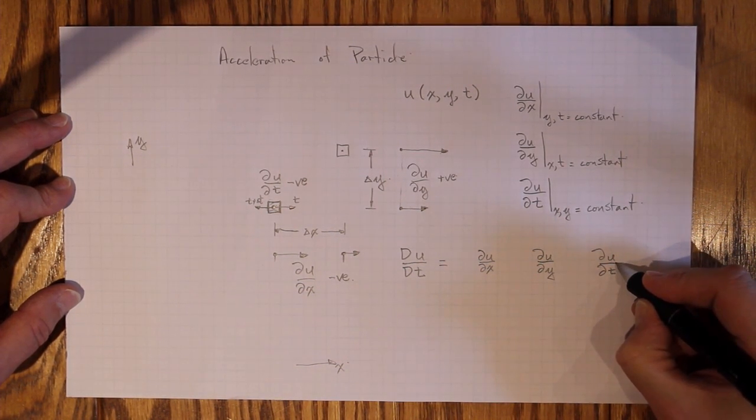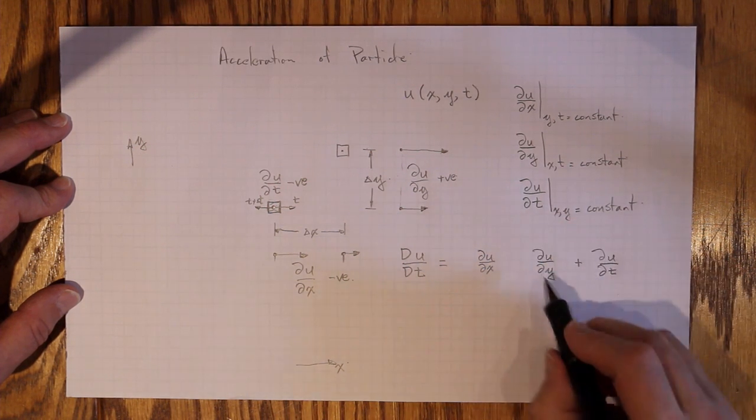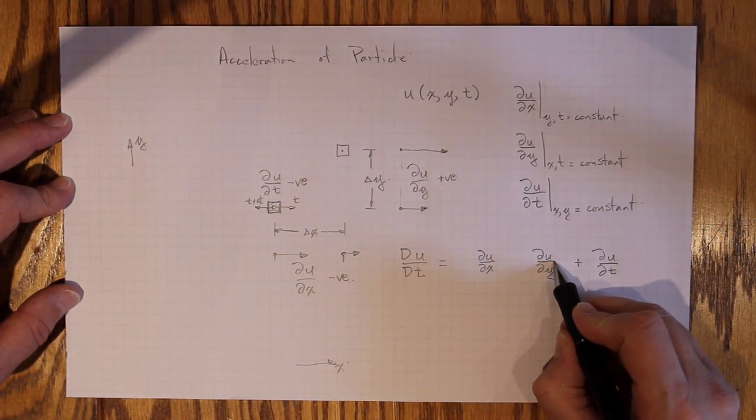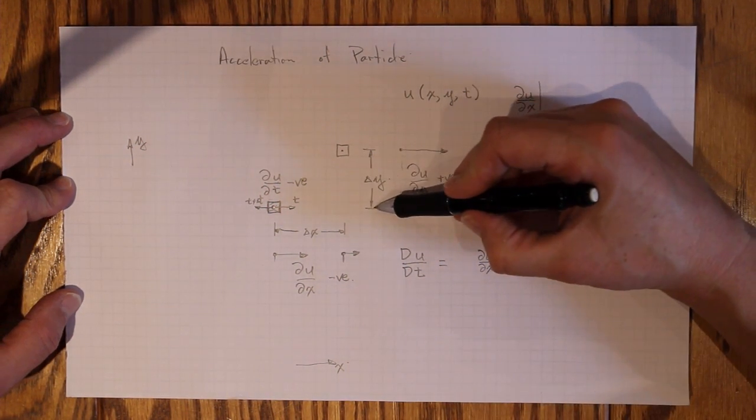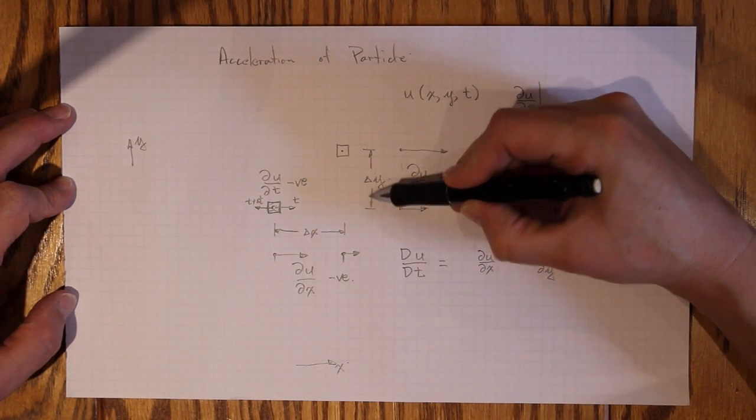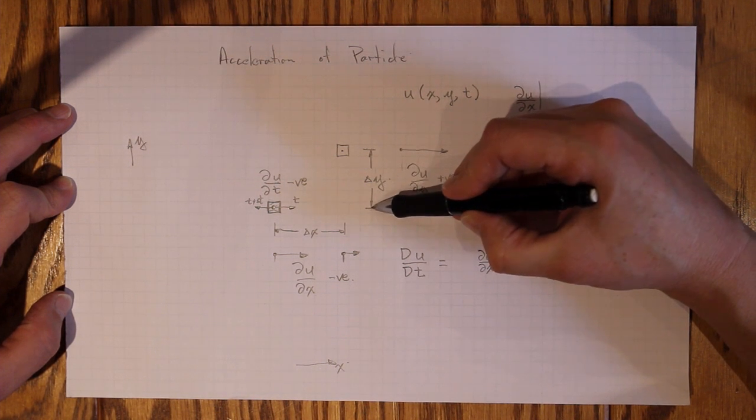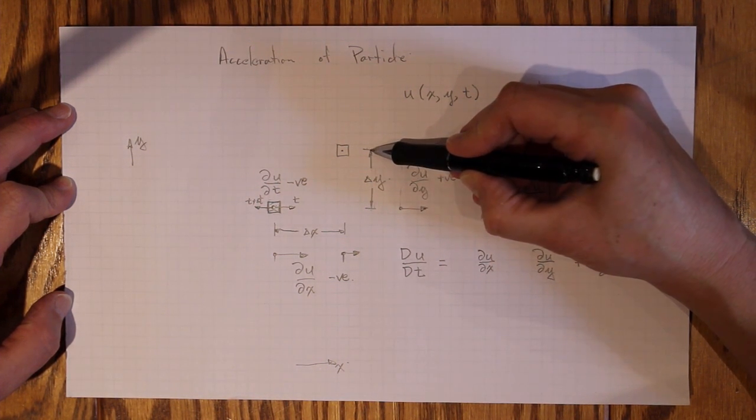Now the ∂u/∂t term doesn't need to be modified by anything. It's just added on. The ∂u/∂y term will depend on how far it moves in the y direction. So how far does it move in the y direction with a given time? What's the rate of motion in the y direction? Well that's just the v component of velocity.